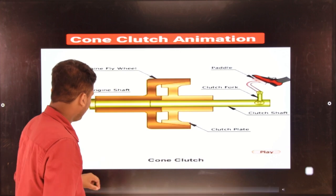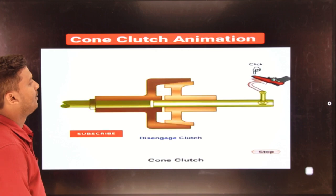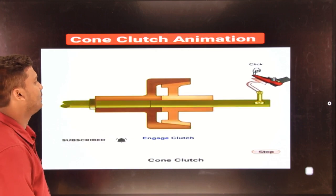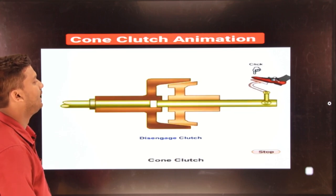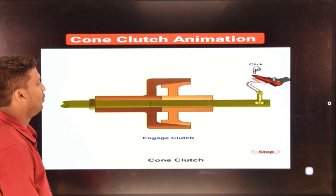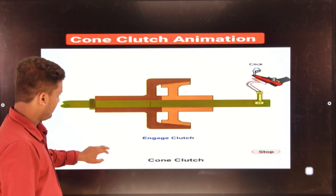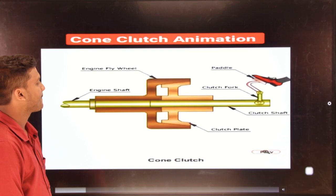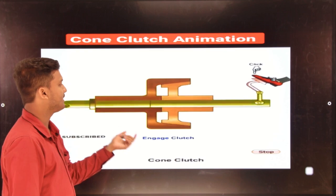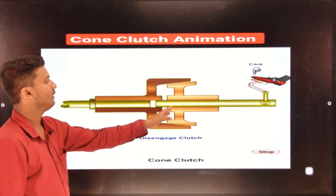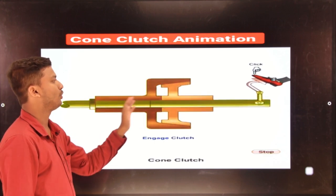Short videos can help you understand better. This shows disengagement when the clutch pedal is pressed, then engagement, then disengagement again. When there is disengagement, no power is transmitted; when engagement occurs, power is transmitted. The inner cone and female cone both move in a to-and-fro motion by means of the clutch plate system.